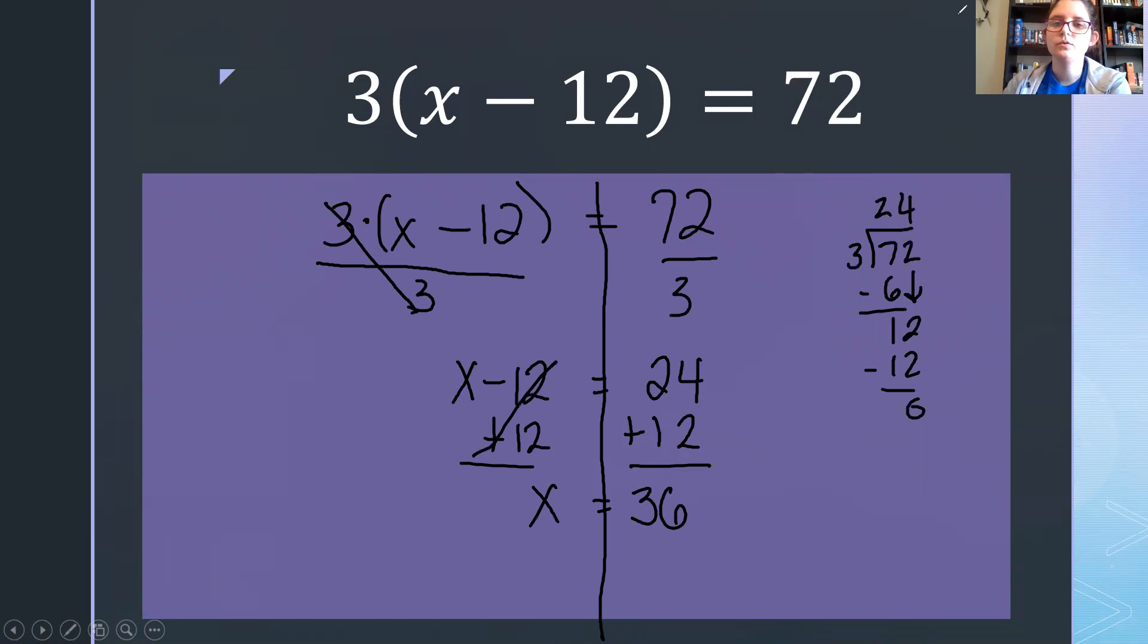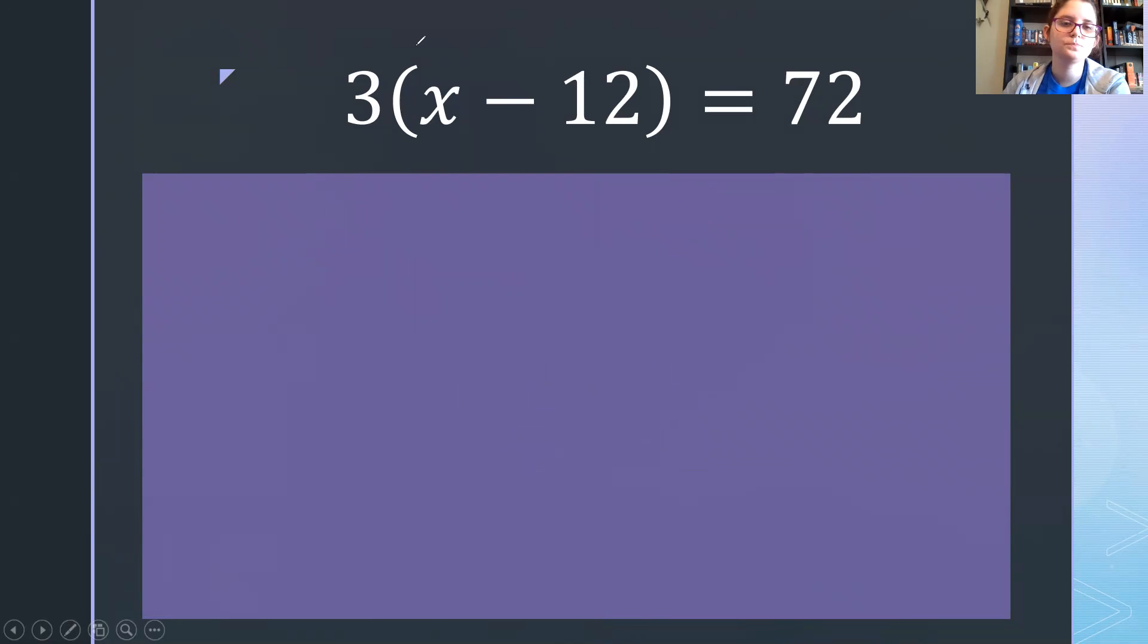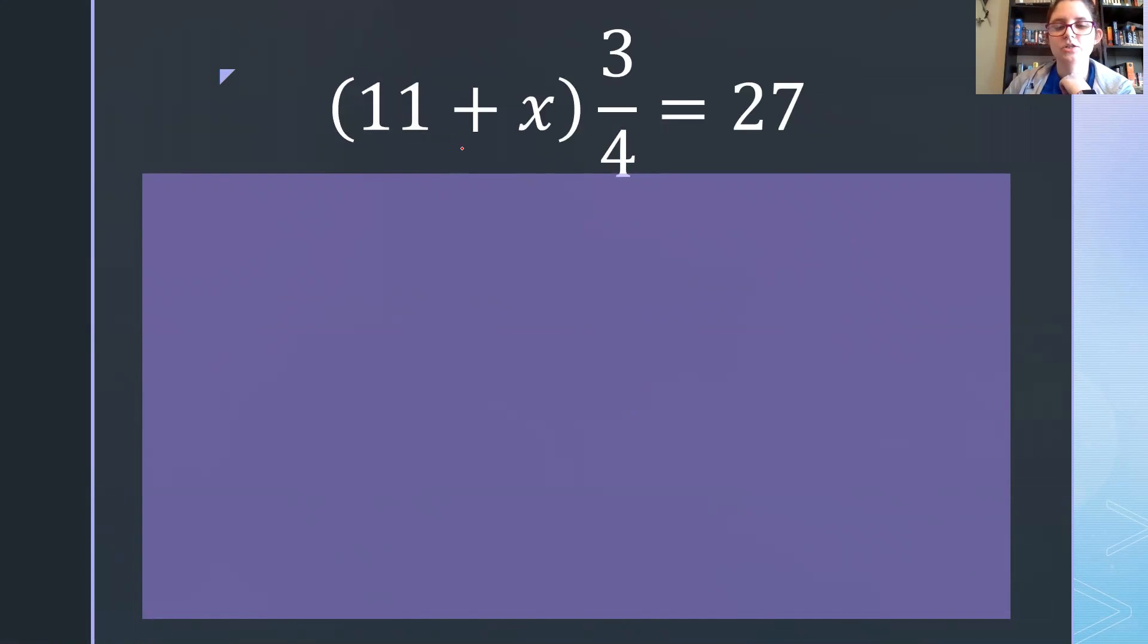We have one more example of undoing the distributive property in a two-step equation. So let's go ahead and take a look at that. This one also has a fraction and it's written in a different order, but that's okay. We're going to solve it the same way.